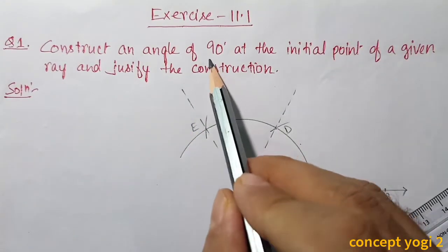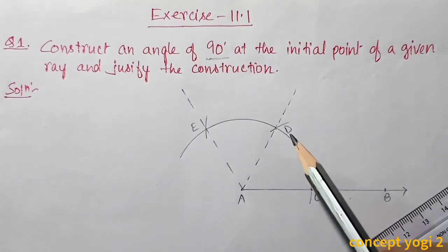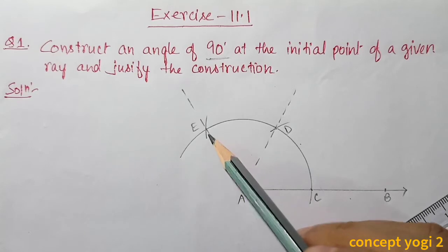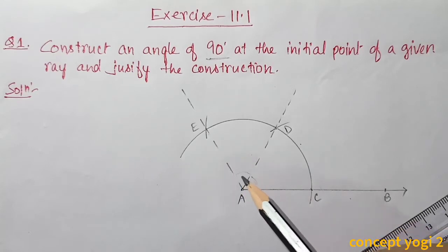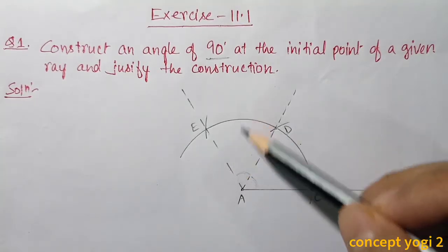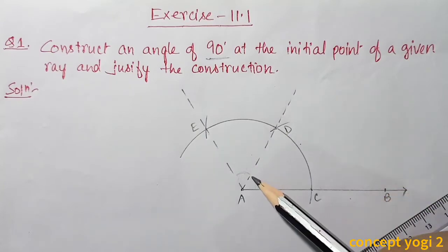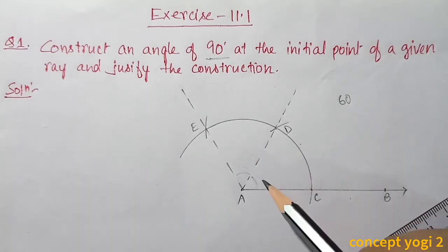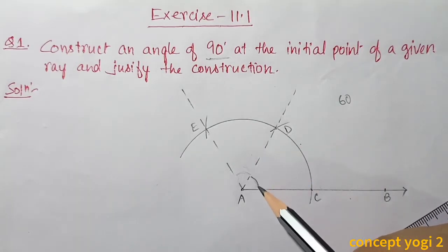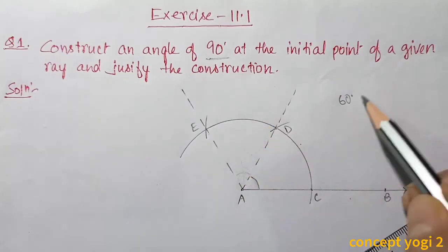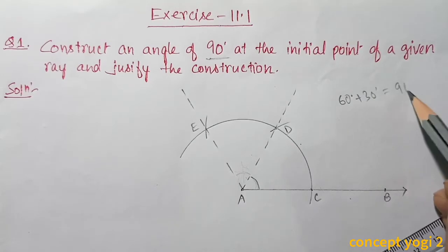But in the question we are asked to draw a 90 degree angle. Up to here this angle is 60 degrees. The angle between E and D is another 60 degree angle. So if we bisect this angle we will get 30 degrees. 60 plus 30 gives us 90 degrees.